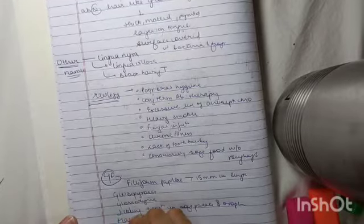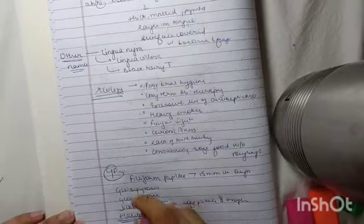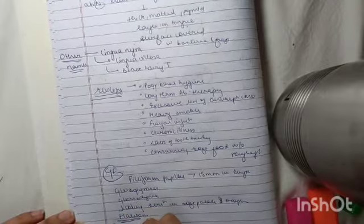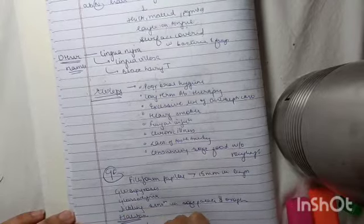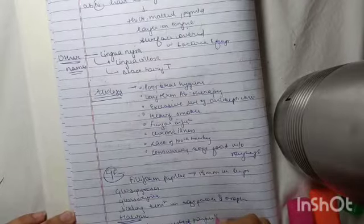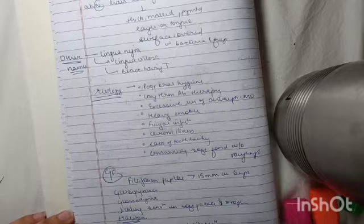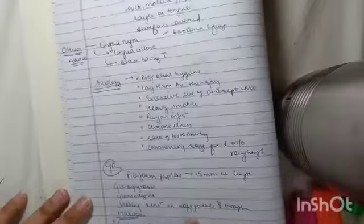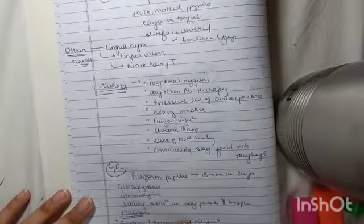Then halitosis. What is halitosis? It is the presence of fetid odor. Then the keyword here: earthy or encrusted tongue, because there is a thick, leathery, matted, and pigmented coating on the tongue surface. Also, gagging sensation.